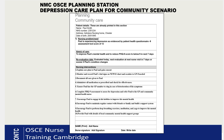Number six: complete the PHQ-9 assessment to assess for depression, refer Paul back to the GP with the results for further management, refer Paul to the community mental health nurse, and inform the GP of the PHQ-9 score. Number seven: encourage Paul to engage in his hobbies to improve his mental health, and encourage Paul to maintain regular contact with family and friends to build a support system.